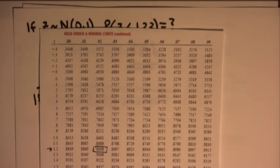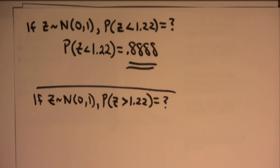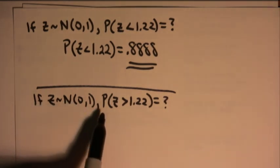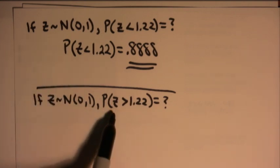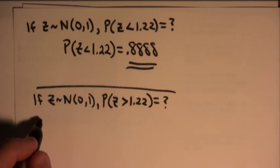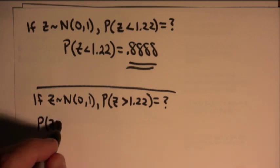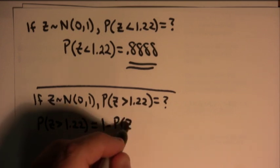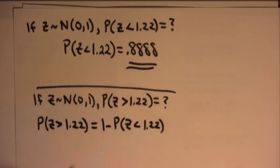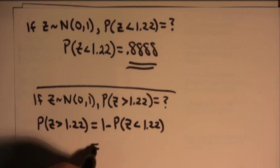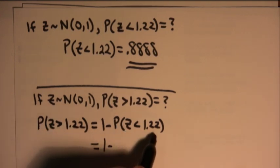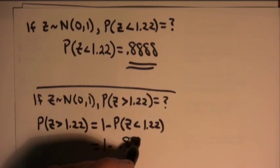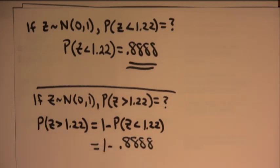The fact of the matter is, the total area under a normal curve is 1. So if I'm looking for the area to the right and the table gives me the area to the left, what I have to realize is that any greater than value is equal to 1 minus the corresponding less than value. And so, truly, I do look up 1.22 and write down 0.8888, but I subtract it from 1 in order to get my final answer.